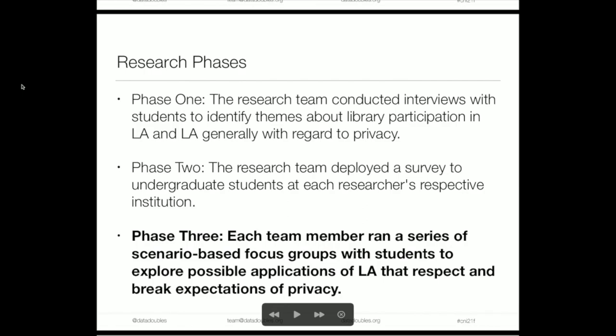We had three research phases. The first phase: we conducted semi-structured interviews with students across eight institutions, about 15 interviews each, to understand generally what students thought about learning analytics, their expectations of privacy, and specifically how that related to academic libraries. Using that information, we launched phase two, developing a survey fielded to undergraduate students at each researcher's institution. That brings us to phase three, where we ran a series of scenario-based focus groups with students to explore the applications of learning analytics.